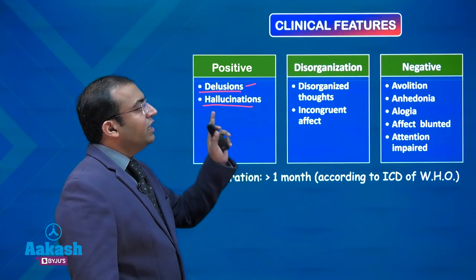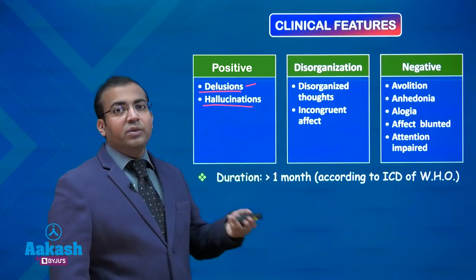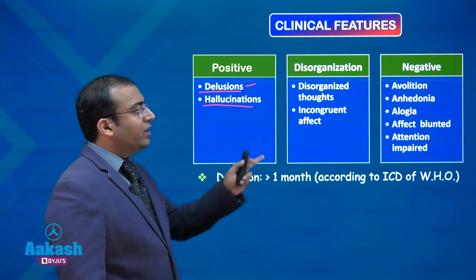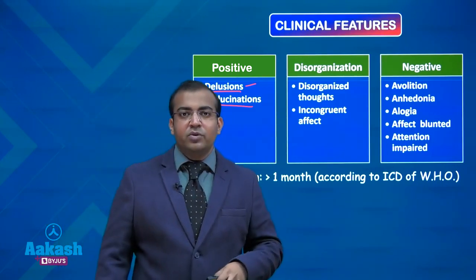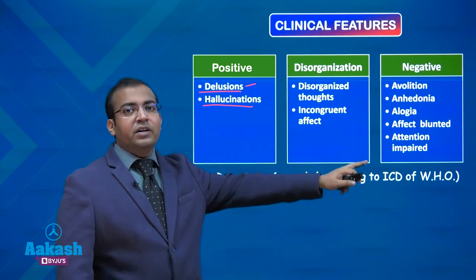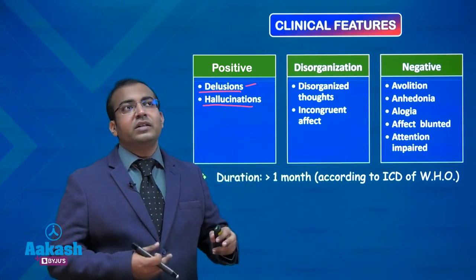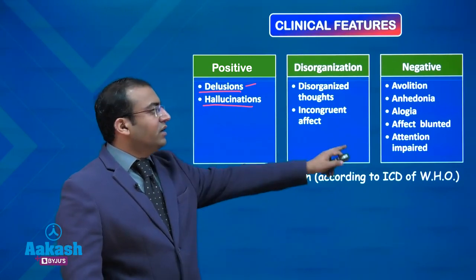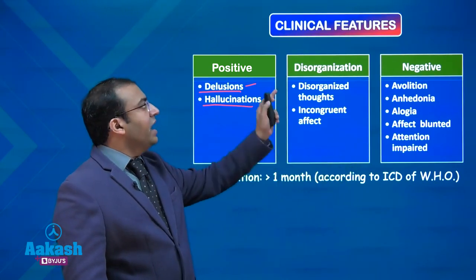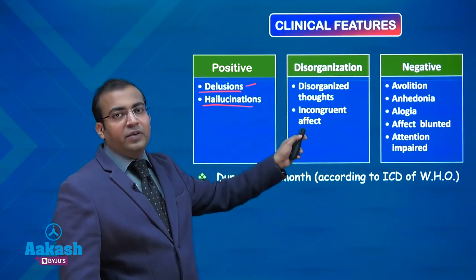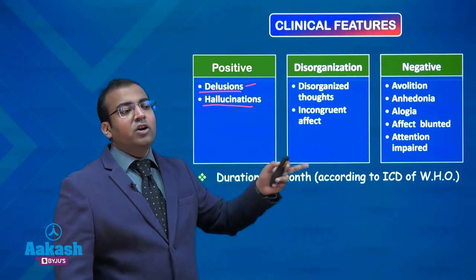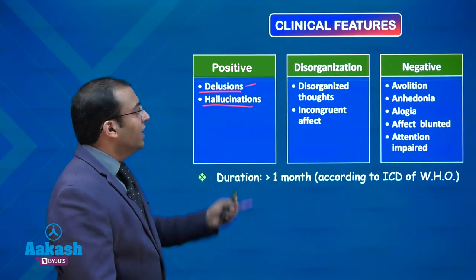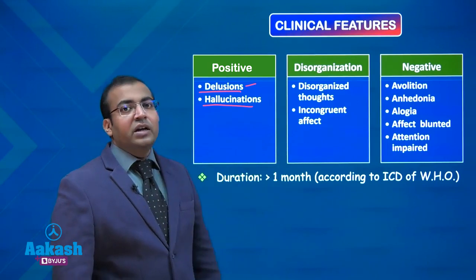Negative symptoms include avolition, where the patient does not engage in activities; anhedonia and lack of interest; alogia, where speech output is reduced or absent; and blunting of affect, where reactionary sad mood or a feeling of cheerfulness is absent. There is also impairment of attention, disorganization in thought and affect, and the patient will not be able to put together ideas to make a meaningful statement or conversation, with incongruent affective responses.